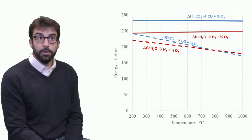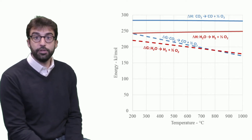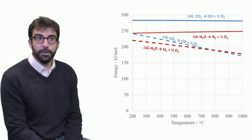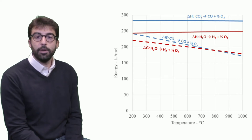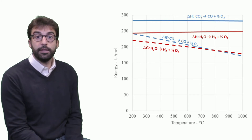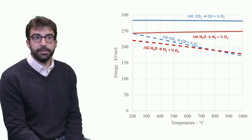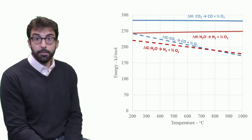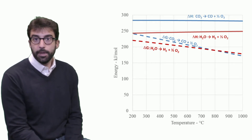From the thermodynamic point of view, the enthalpy variation required for carbon dioxide decomposition is higher compared to steam decomposition. But if we look at the Gibbs free energy — which determines the amount of work required for the reaction — we see that the two curves tend to converge around 700–800 degrees Celsius, which is the typical operating temperature of these devices. This means both reactions can occur with the same amount of work required within the high-temperature electrolyzer operating range.